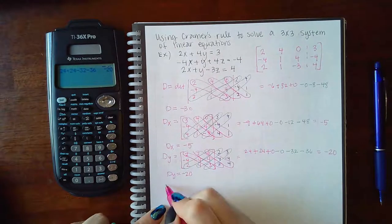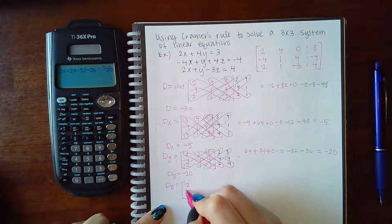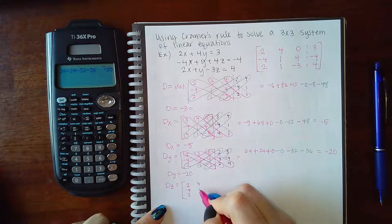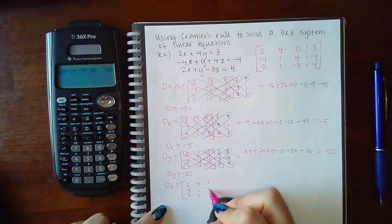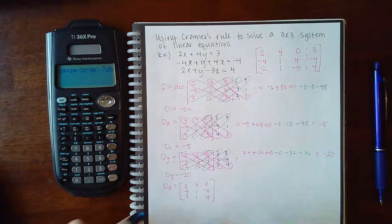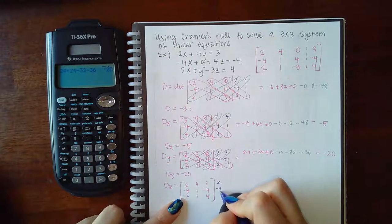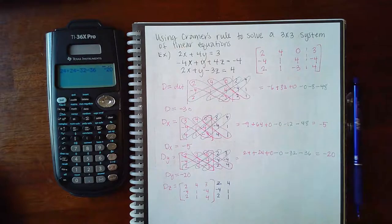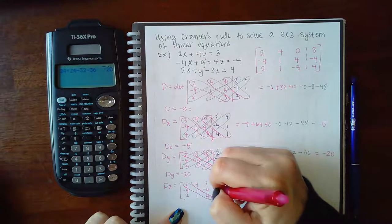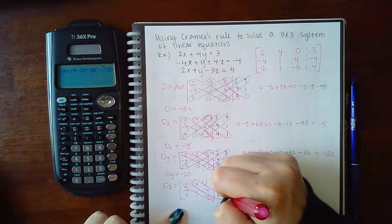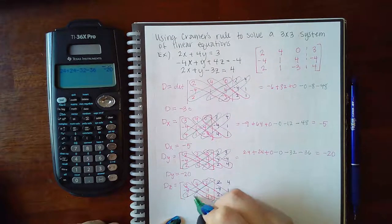We have a third variable, so we do need to do a third matrix here. So the X column will stay the same. The Y column will stay the same. But the Z column will turn into the constants. So let's rewrite those first two columns. And then let's do our circles. Oops, running that up some pink ink here.